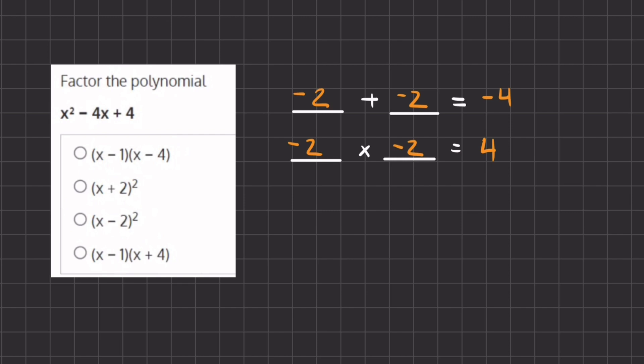Therefore, our factors will be negative 2 and negative 2. So if we write that out, we're going to have x minus 2 and x minus 2.